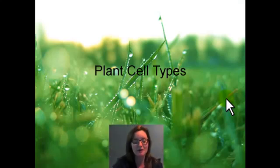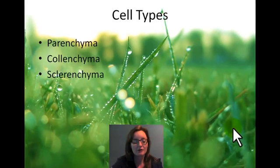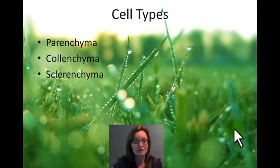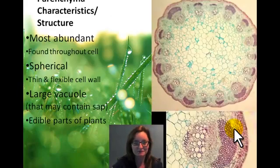Today we're going to talk about plant cell types, and there are three main types that we need to discuss: parenchyma, colenchyma, and sclerenchyma. Now, those words are quite large and they sound unusual, but let's figure out what they are.